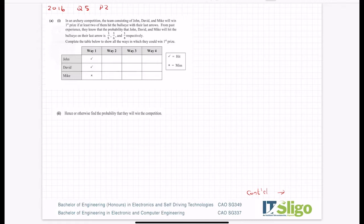Okay, so let's dissect this a bit. They'll win first prize if at least two of them hit the bullseye, so at least two means all three can hit, or just two of them. So the probabilities that they hit the bullseye are a fifth, a sixth, and a quarter. Let me jot that down.